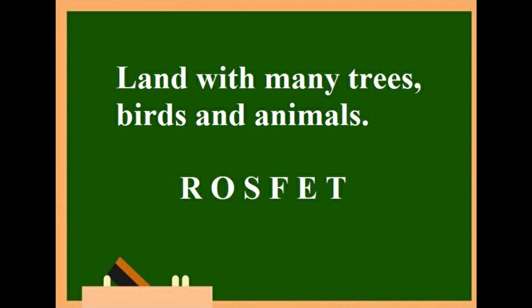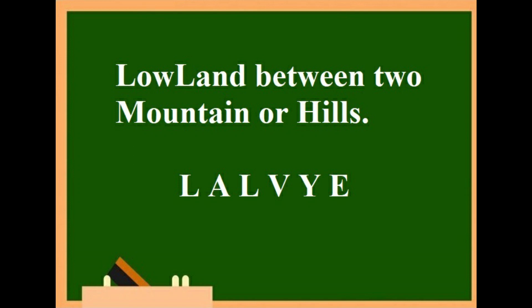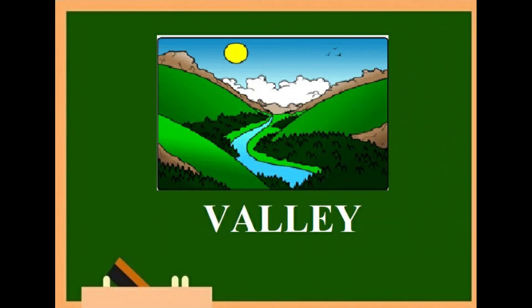Fifth: it is a forest. Sixth: low land between two mountains or hills. Let us unscramble this — L-A-L-V-Y-E. Yes, it is a valley.